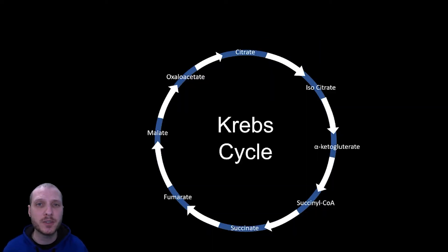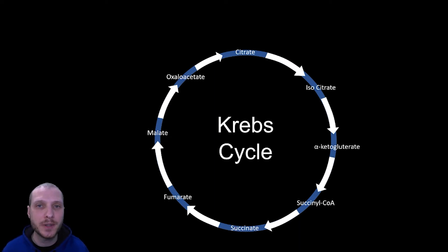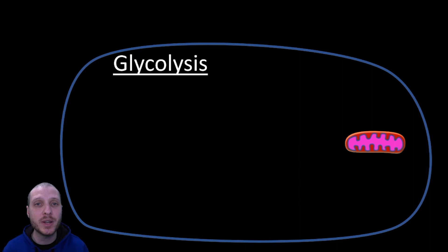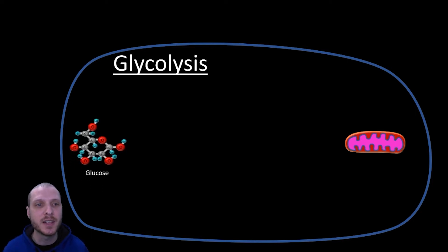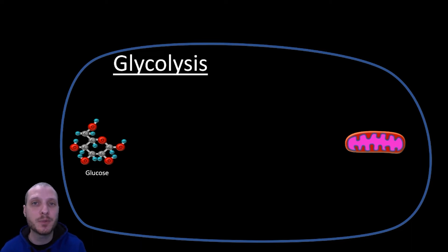Here we can see an overview of the Krebs cycle, also called the TCA cycle or citric acid cycle — a series of chemical reactions that produce electron-rich NADH and FADH2 molecules and the CO2 we breathe out. Before we look specifically at each step, we need to zoom back out and see how our body takes the food we eat and puts it into our cells. After we break down carbohydrates and glucose is brought into our cells, the first step is glycolysis, but since this isn't the focus of the video, we'll move through it quickly.